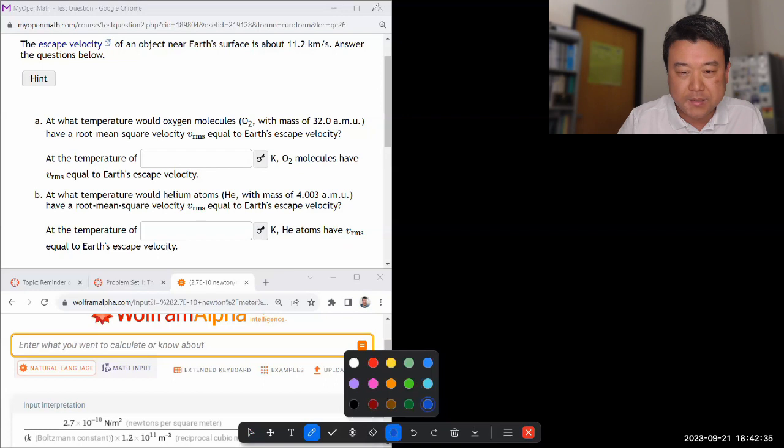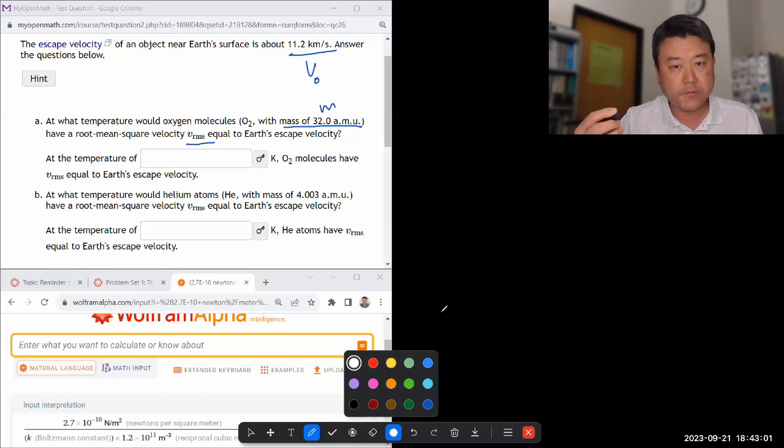So you're given some velocity, some sort of reference velocity. Let me just label that V naught. It asks, at what temperature would oxygen molecules with some mass have an RMS velocity equal to Earth's escape velocity? I guess the toughest thing here is to realize this connects to the kinetic theory of gas, and one particular thing it connects to is what we call equipartition theorem.